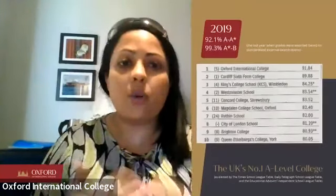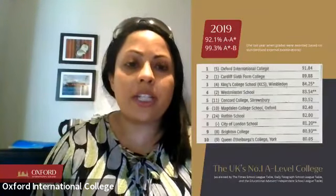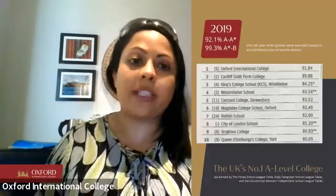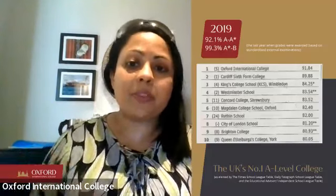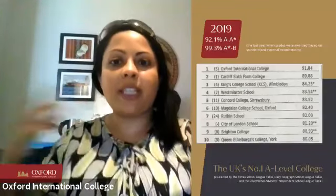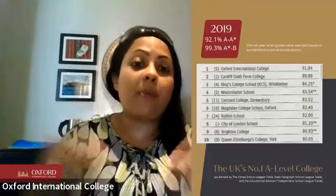A quick introduction: Oxford International College is number one in the UK. The last year grades were awarded based on standardized examination was 2019 — we were the only school with above 90% A* to A grades. We've maintained that position since. Over the last two years of teacher-assessed grades, we were not mentioned by The Times or Sunday Times among schools that inflated their results, which is huge goodwill currency with universities.